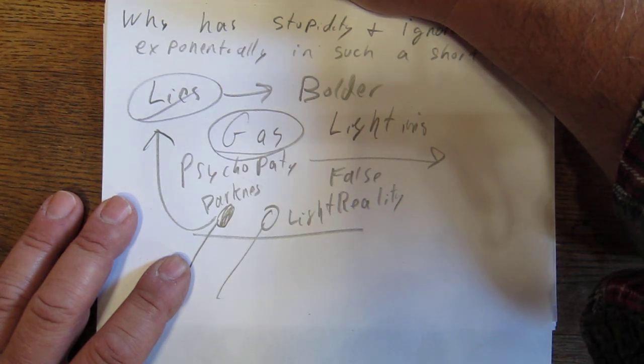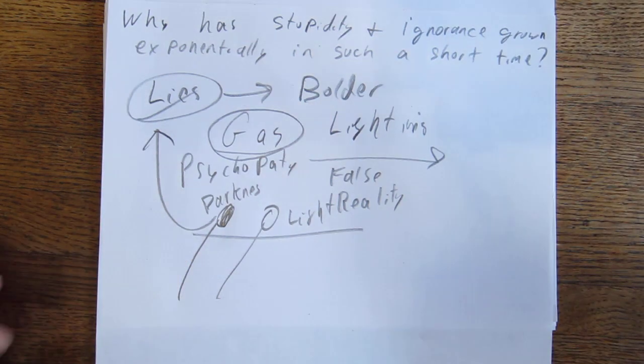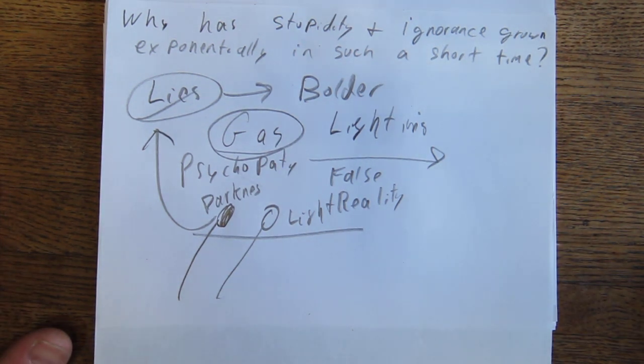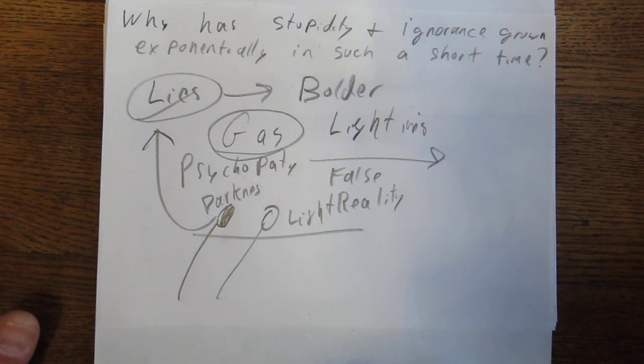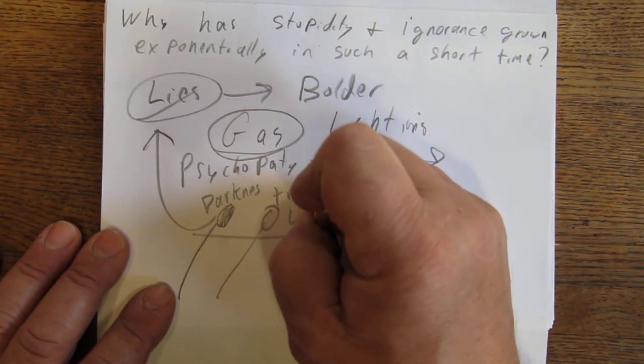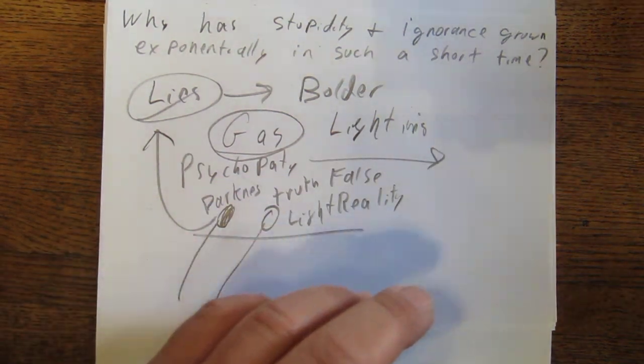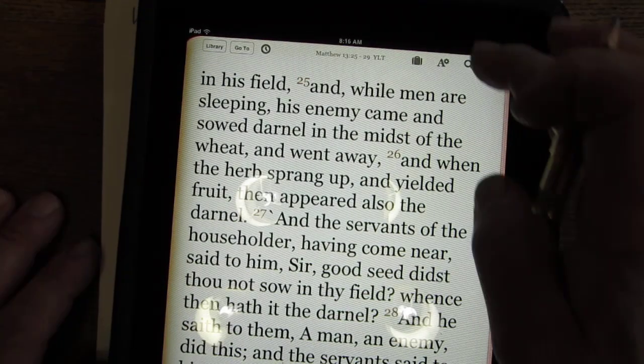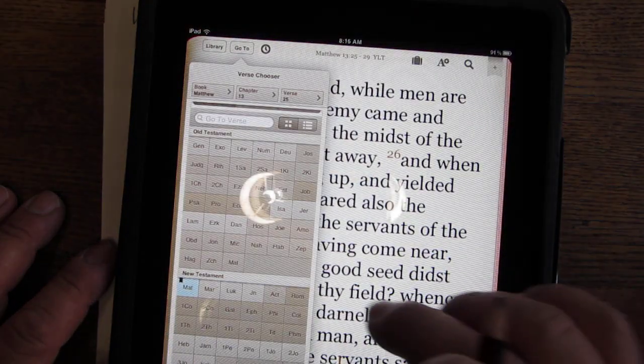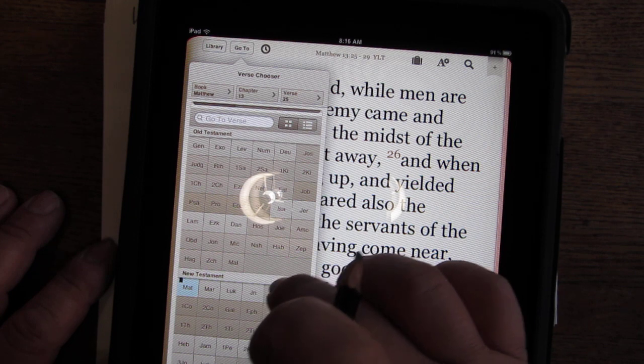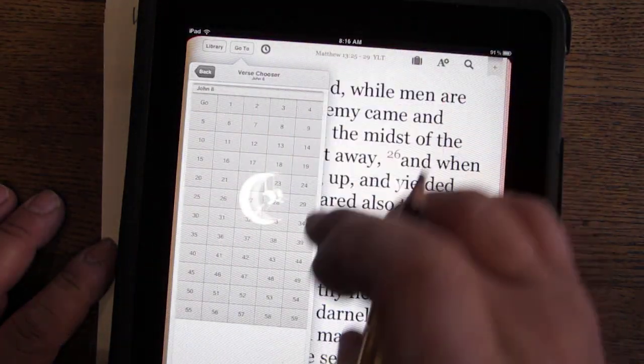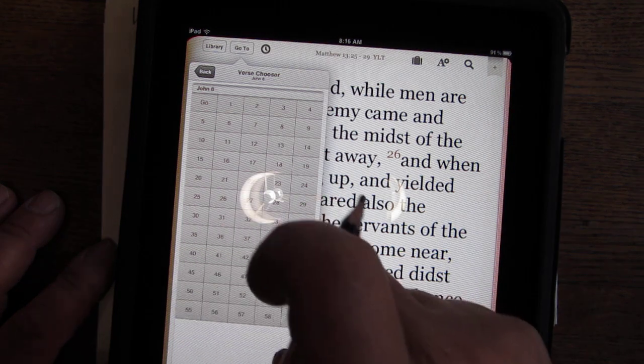John 844. Ye are of your father, the devil and the desires of your father he will do. He was a manslayer from the beginning. And in truth, remember, truth, this is truth. In fact, let's put it here. We'll go 844 here. This way it's a little bit better. Because I'd rather have everybody like kind of read along.